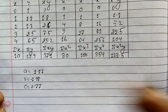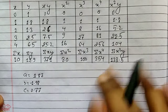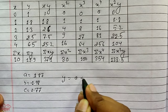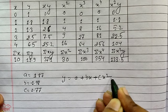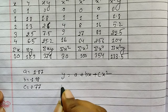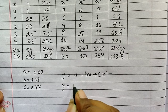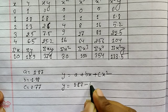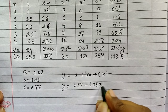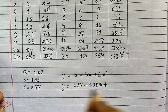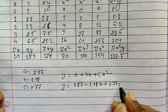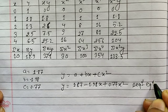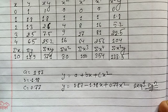Now substitute the values of a, b and c back into the given equation. Since y equals a plus bx plus cx squared, our solution is y equals 1.87 minus 1.98x plus 0.77x squared. This is our required fitted equation. Thanks for watching this video.